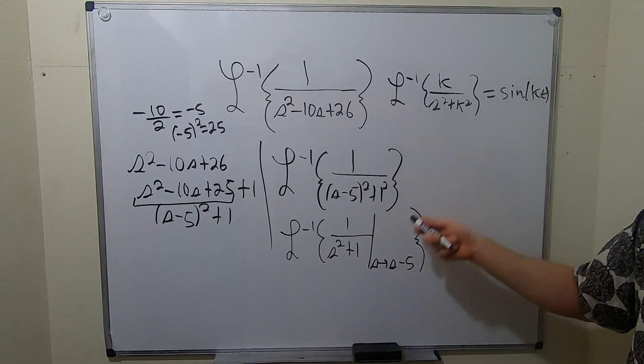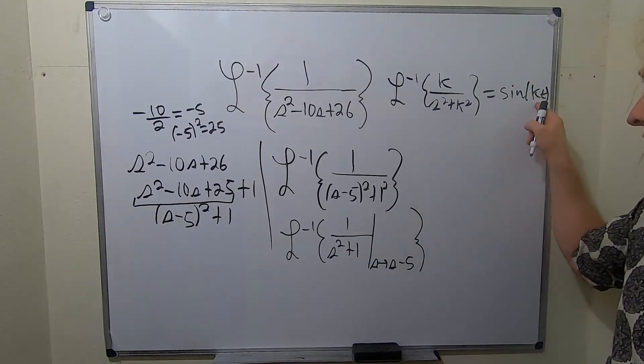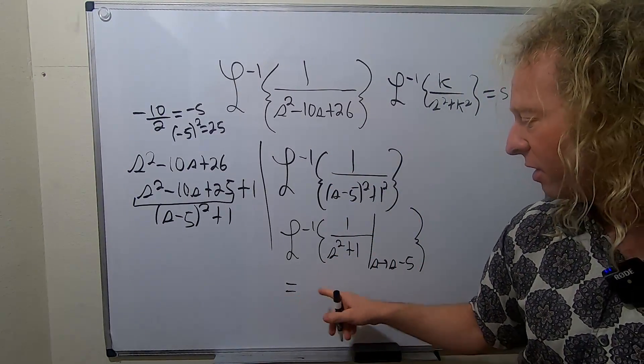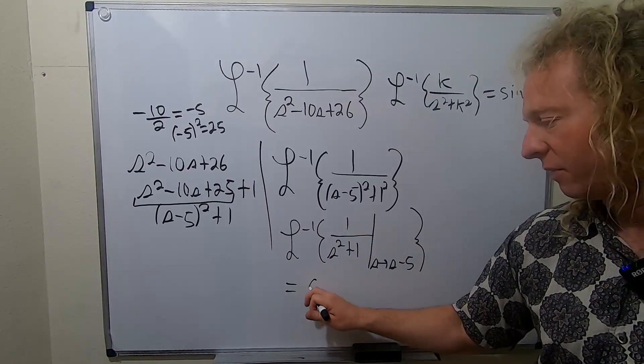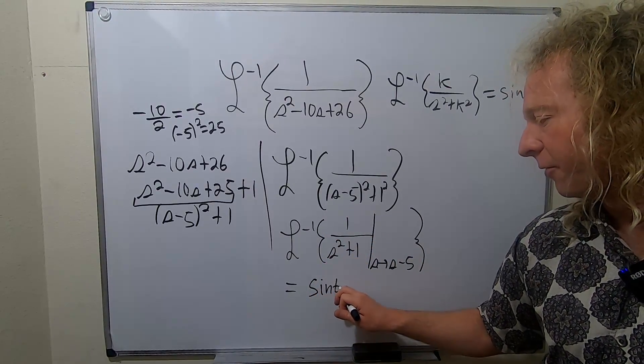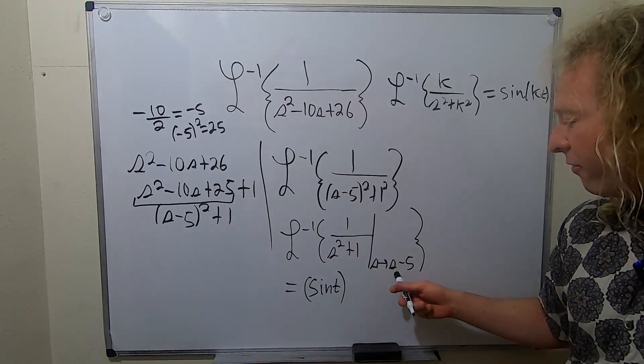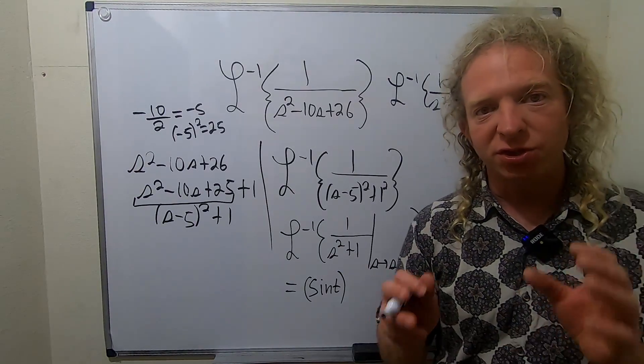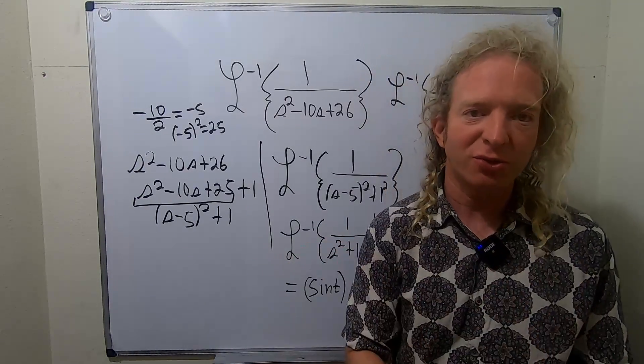So the reason we did this is because we want to use this formula. So now you see we can simply apply the formula where k is 1, and we'll get sine of t. So now that we've done the shift, this is going to be sine of t. And I don't know if you remember from before, but whenever you do a shift like this, you're going to get an exponential, right? Shifts turn into exponentials. Exponentials turn into shifts.